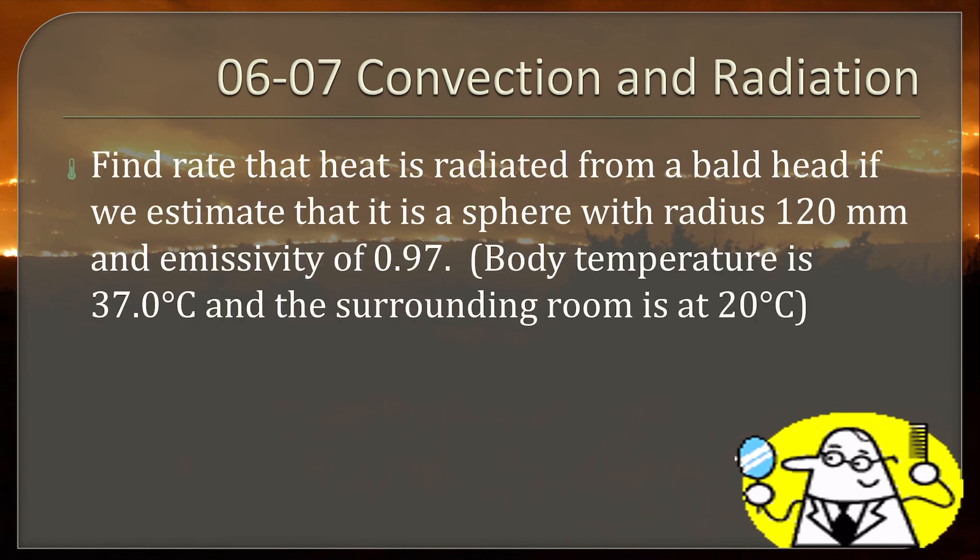Find the rate that heat is radiated from a bald head if we estimate that it is a sphere with a radius of 120 millimeters and an emissivity of .97. The body temperature is 37 degrees Celsius and the surrounding room is at 20 degrees Celsius. Okay, so we have q over t. This time, since this is what we want as the net, so we are going to be subtracting these temperatures.